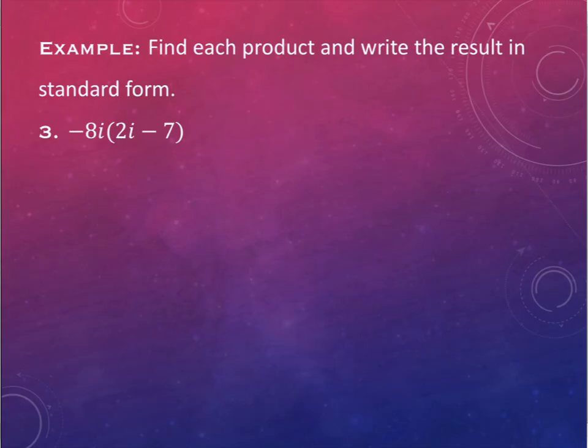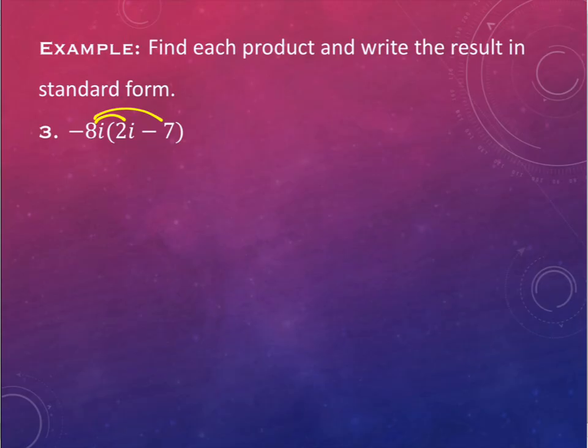So let's take a look at an example. On this one, we have a monomial — a one-term piece in the front — and we have a binomial, two terms in the middle. We're going to do just like you would if you had these as x's — you're going to distribute this through. So it's a basic distribution problem. I have negative 8i times 2i. What will that give me? Negative 16i squared.